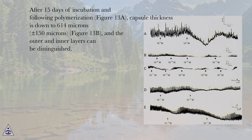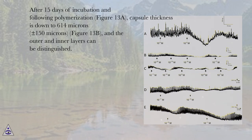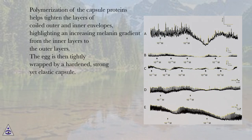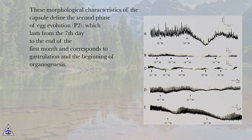After 15 days of incubation and following polymerization (figure 13a), capsule thickness is down to 614 microns ± 150 microns (figure 13b), and the outer and inner layers can be distinguished. Polymerization of the capsule proteins helps tighten the layers of coiled outer and inner envelopes, highlighting an increasing melanin gradient from the inner layers to the outer layers. The egg is then tightly wrapped by a hardened, strong yet elastic capsule. These morphological characteristics define the second phase, P2, which lasts from the seventh day to the end of the first month and corresponds to gastrulation and the beginning of organogenesis.